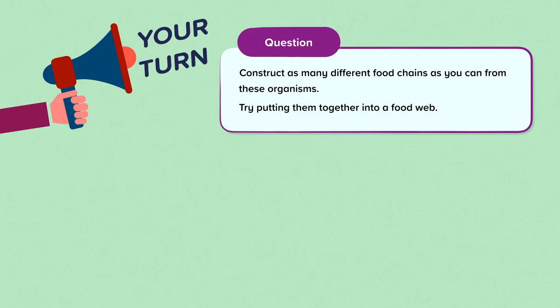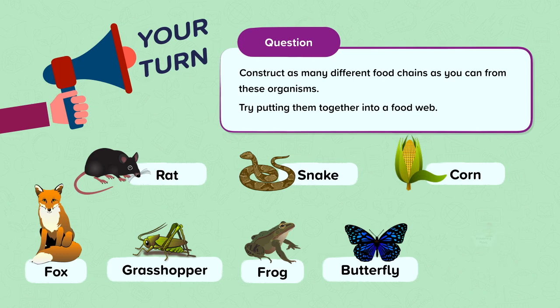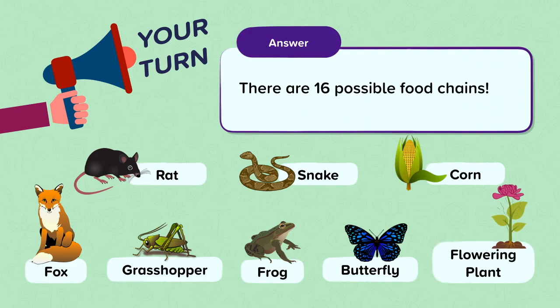Now it's your turn again. Pause the video and have a go at drawing some food chains with the following animals. See how many food chains you can make. Maybe even challenge yourself to link them all up into a food web. There are 16 possible food chains.